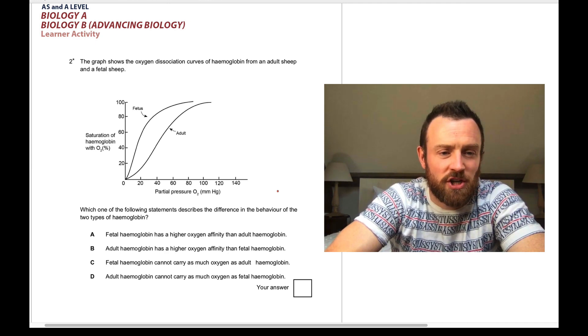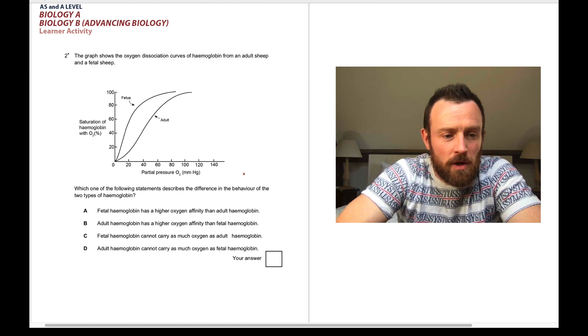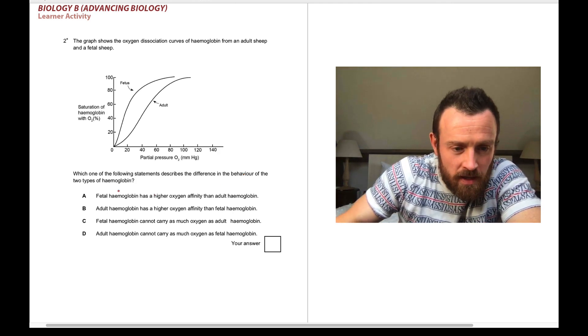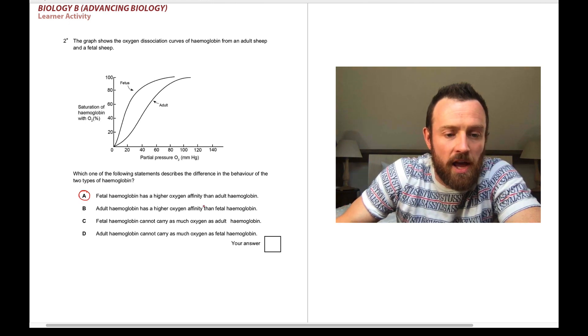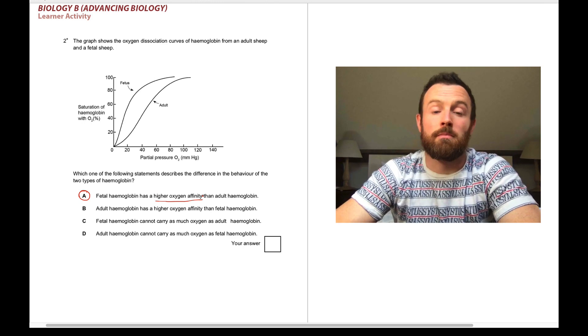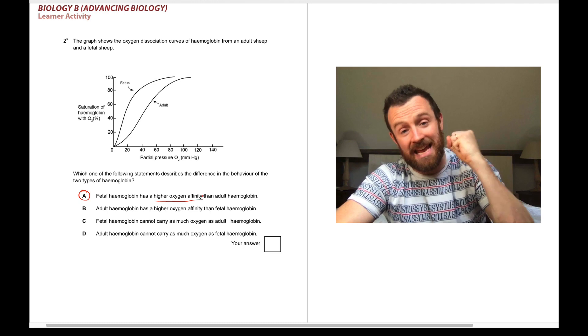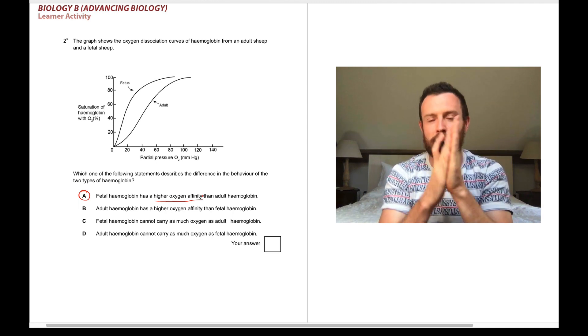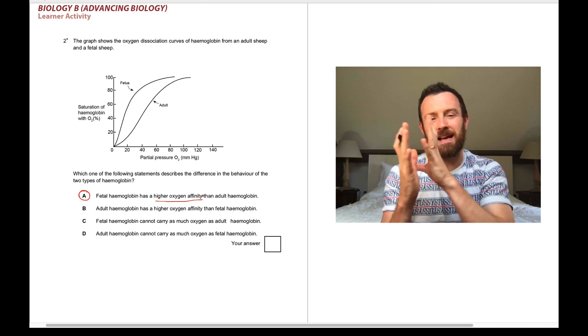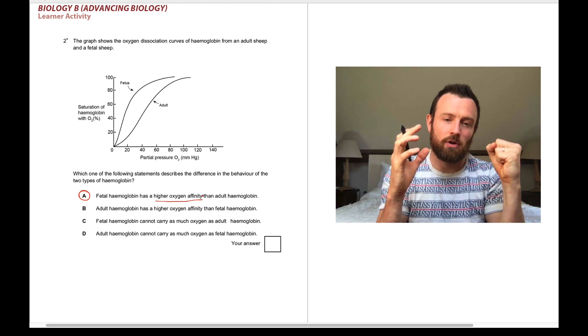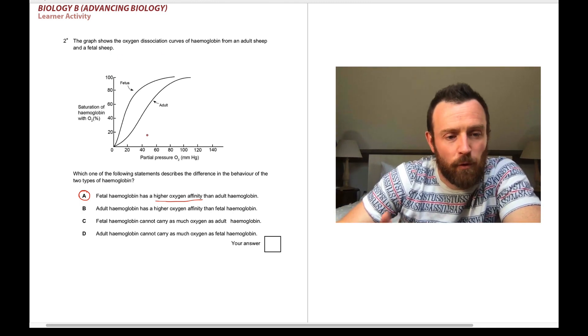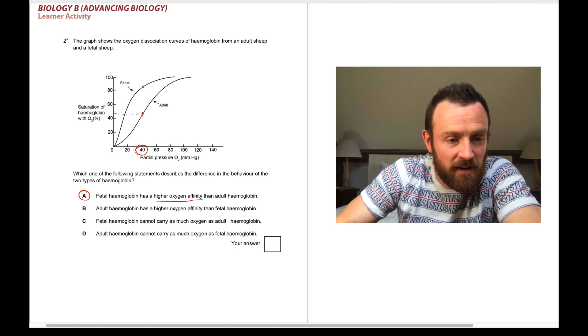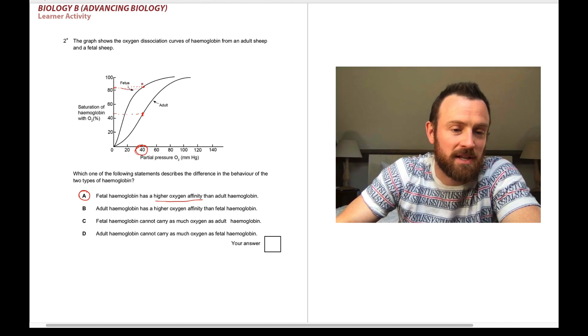Number two, the graph shows the oxygen dissociation curves of hemoglobin from an adult sheep and a fetal sheep. Which one of the following statements describes the difference in the behavior of the two types of hemoglobin? You should pretty much know this one. Fetal hemoglobin has a higher affinity. That means it binds oxygen more strongly. And that is because it has to bind oxygen more strongly if it's going to take oxygen from the mother's blood when it flows through the placenta. So, for example, at any partial pressure, if we look at 40, the adult is binding at like 42 percent. But the fetal hemoglobin is binding at something like 82 percent. So it's a lot higher affinity.